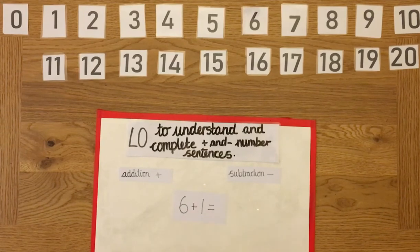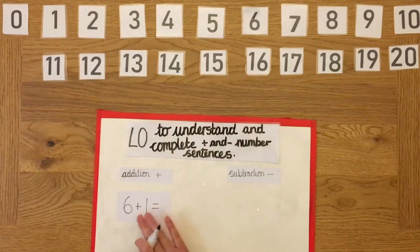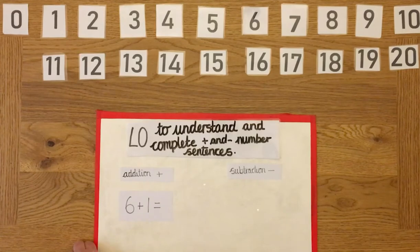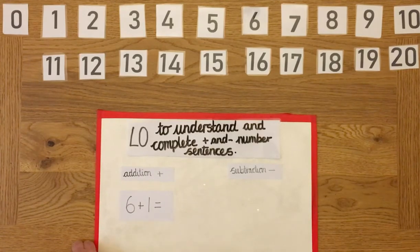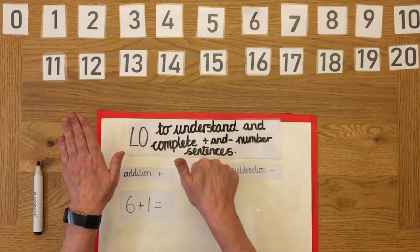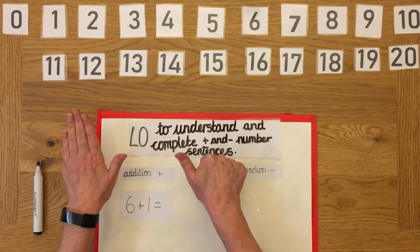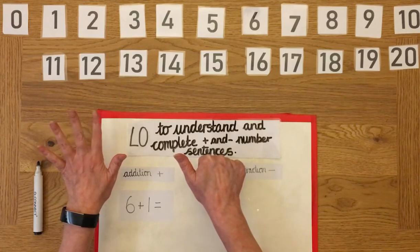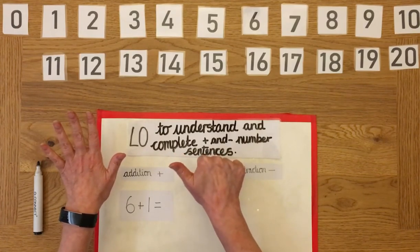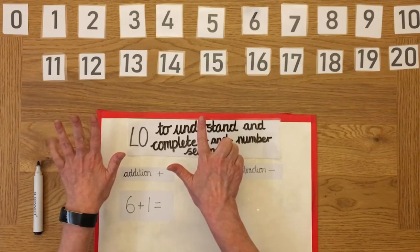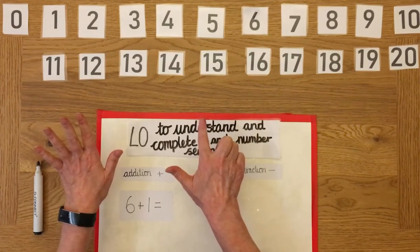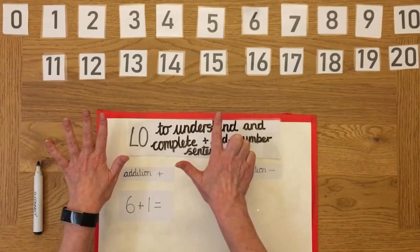Let's look at this one — adding or subtraction? Adding! Six add one. I'm not going to use my number track and I'm not going to do dots — I'm going to use my fingers. I have six and I'm going to add one: one, two, three, four, five, six — add one — one, two, three, four, five, six, seven. My answer is seven!